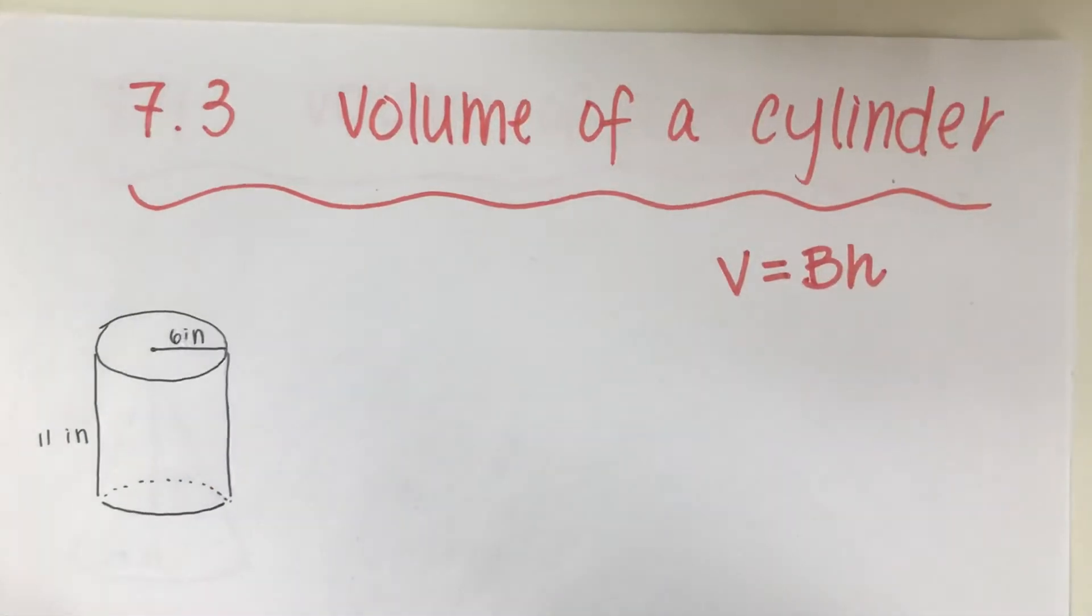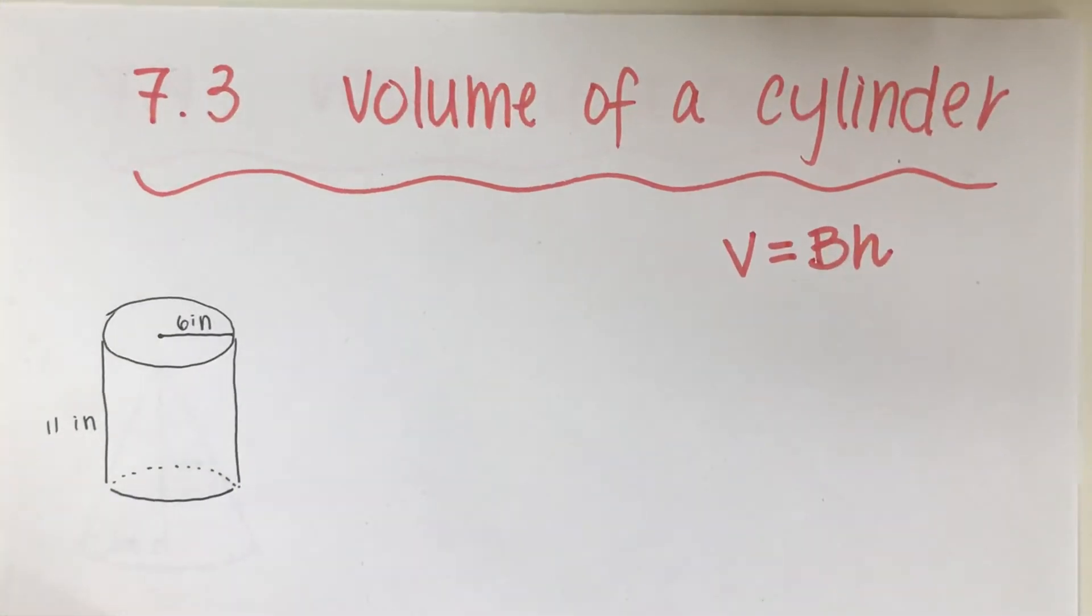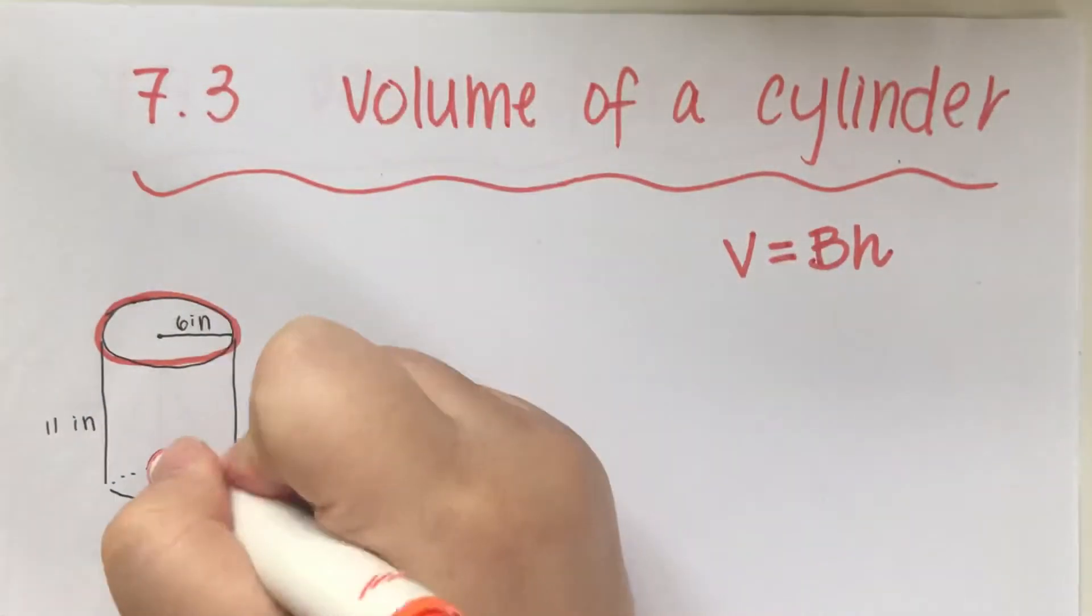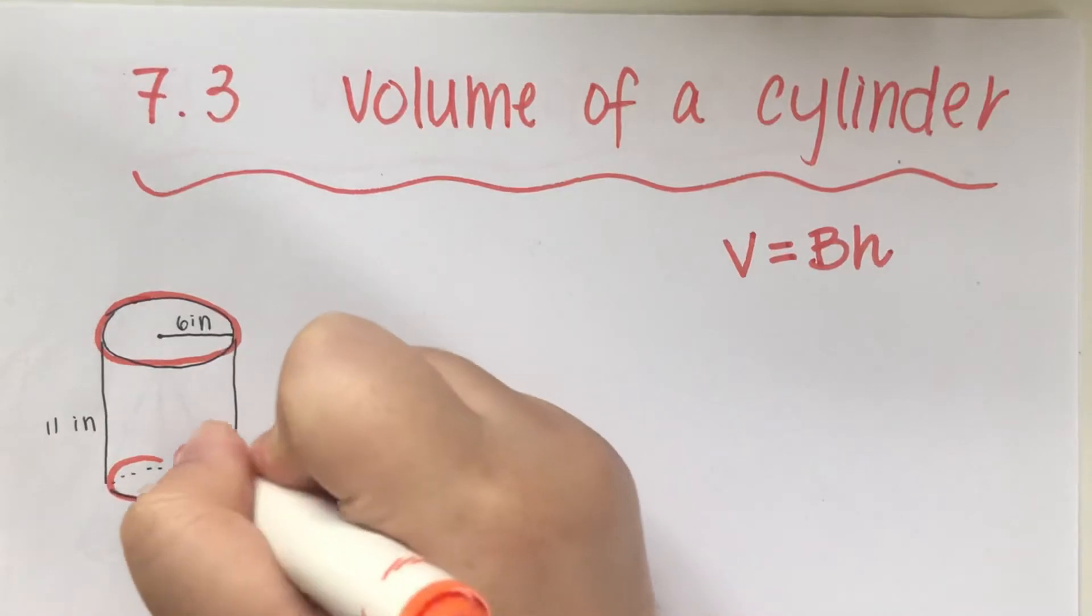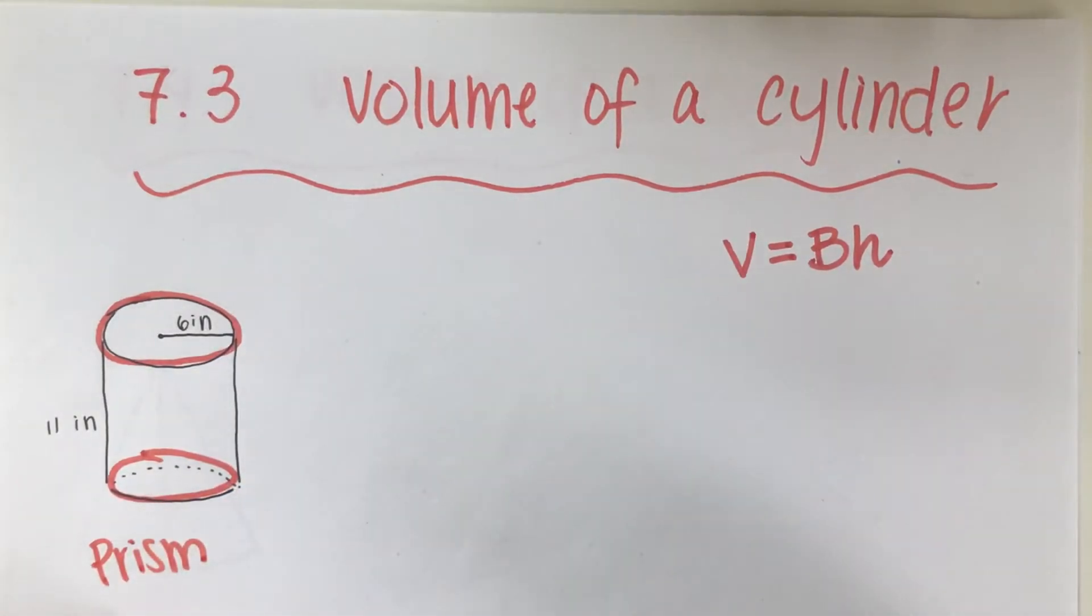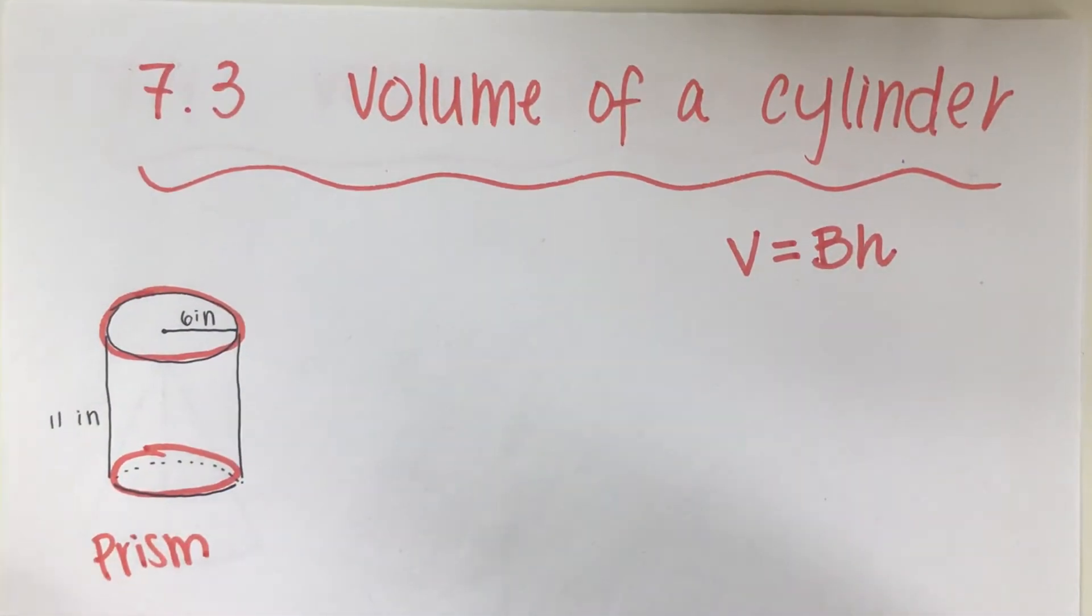They have the same shape and that's why it's a prism. Now let's look at a cylinder. Cylinder is also a prism because on the top I have a circle, on the bottom I also have a circle. That's why this is also a prism, but we don't call it a circle prism—we call it a cylinder.